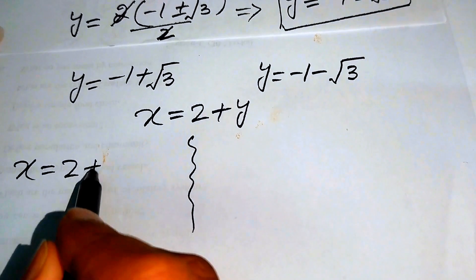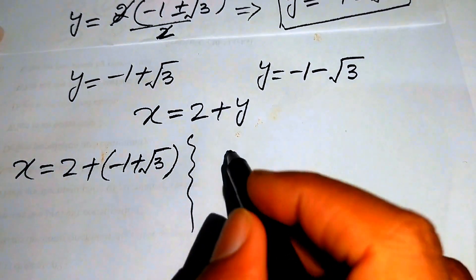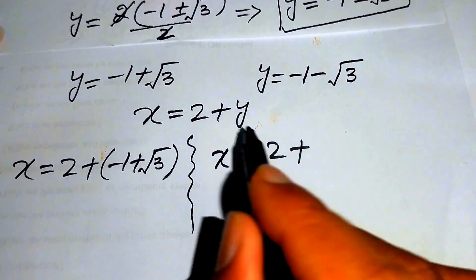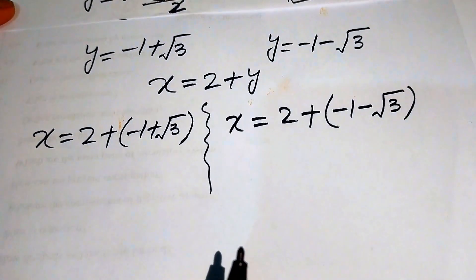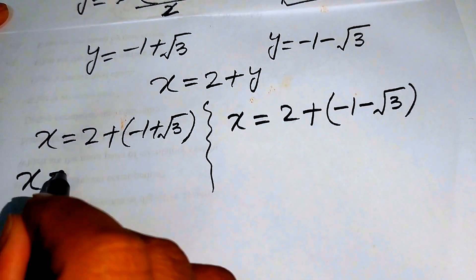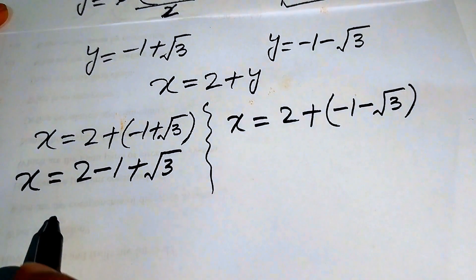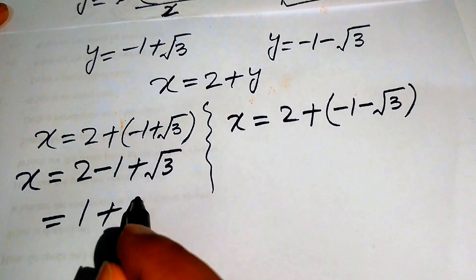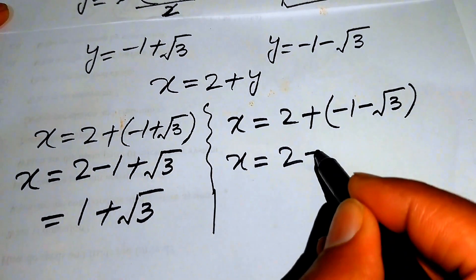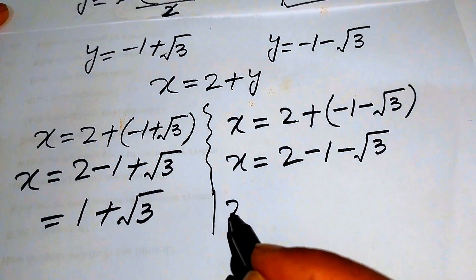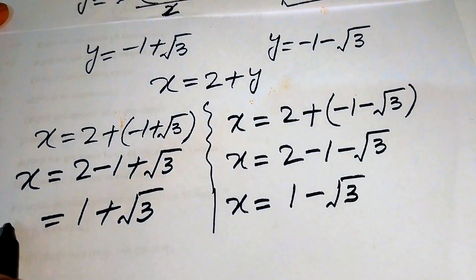For the first case, x equals to 2 plus (minus 1 plus square root of 3), which simplifies to 1 plus square root of 3. Similarly, for the second case, x equals to 2 plus (minus 1 minus square root of 3), which gives x equals to 2 minus 1, that is 1 minus square root of 3. So these are the two values of x.